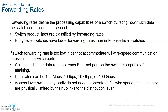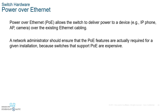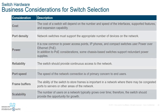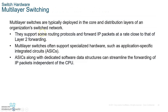Forwarding rates define the processing capability of a switch by rating how much data it can output. You can get up to 100 gigabits per second. One reason fiber is not deployed as much is the expensive forwarding rate per port — it can cost up to 100 dollars or more per port. Power over Ethernet (PoE) means the switch port can supply power to a connected device such as an IP phone. Layer 3 switches are used to interconnect VLANs without requiring a separate router.